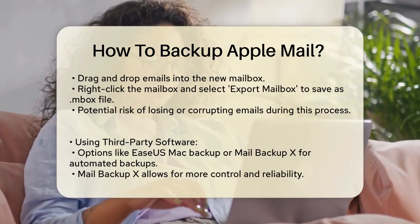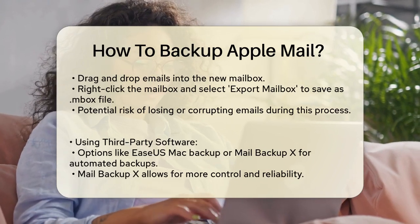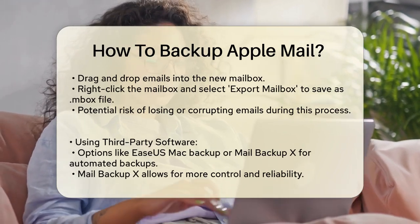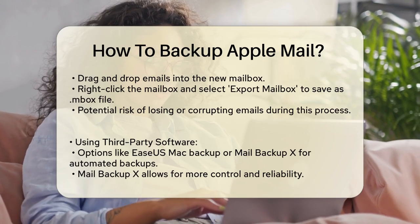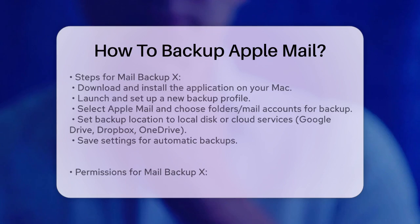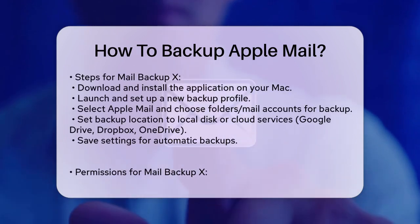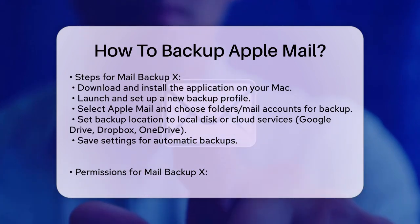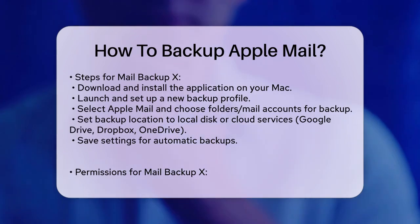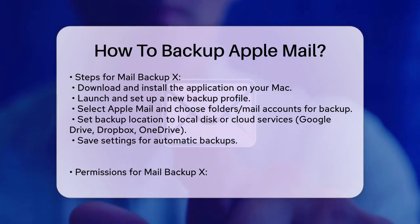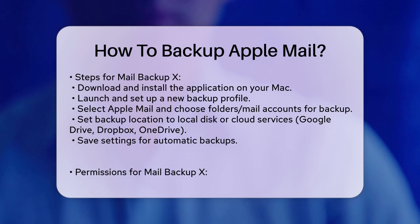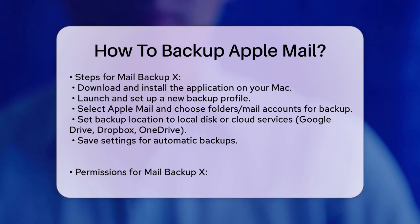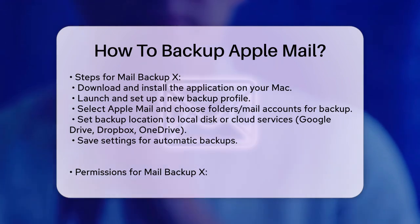Using third-party software. For a more reliable and automated solution, you can use third-party backup software like EaseUS Mac Backup Software or Mail Backup X. These tools offer more control and reliability. For example, with Mail Backup X, you start by downloading and installing the application. Once installed, launch Mail Backup X and set up a new backup profile by selecting Set up a new backup from the dashboard. Choose Apple Mail and proceed to select the folders and mail accounts you want to backup. You can set the backup location to a local disk drive or cloud services like Google Drive, Dropbox, or Microsoft OneDrive. This method ensures your emails are backed up automatically and compressed to save disk space.